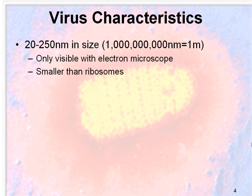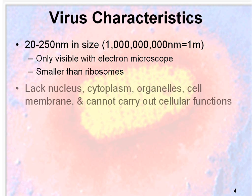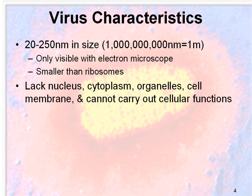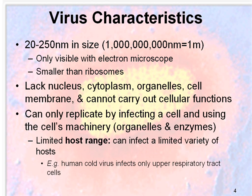Looking at additional virus characteristics, they vary in size but in general they're quite small — between 200 to 250 nanometers, and remember that 1 billion nanometers is 1 meter, so they're really tiny. They're only visible with an electron microscope. In fact, they're so small that they're smaller than ribosomes, the smallest of the organelles. They lack nuclei, cytoplasm, organelles, and cell membrane, and cannot carry out cellular functions. They can only replicate by infecting a cell and using the cell's machinery — its organelles and enzymes.